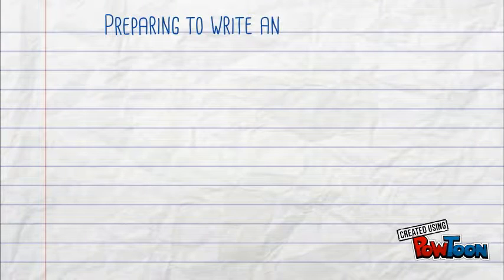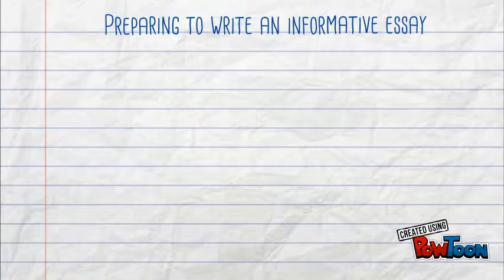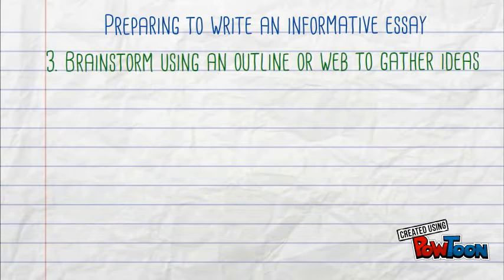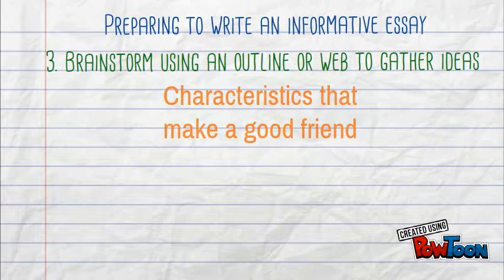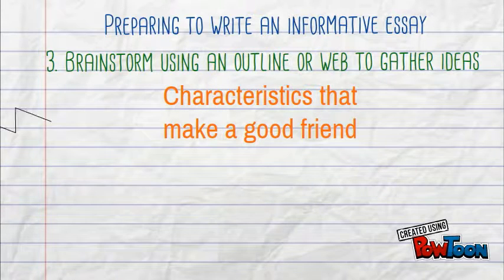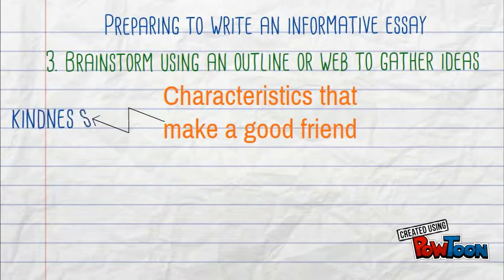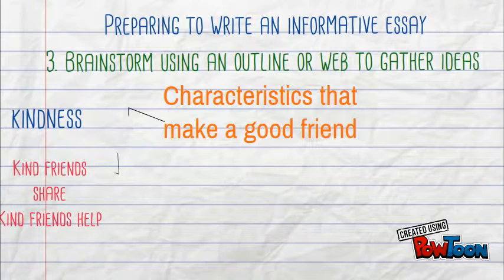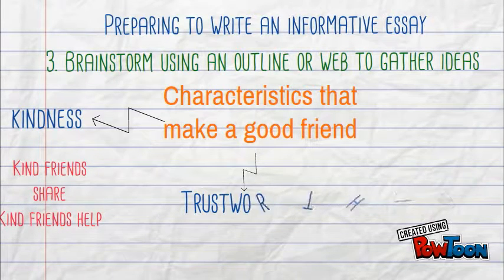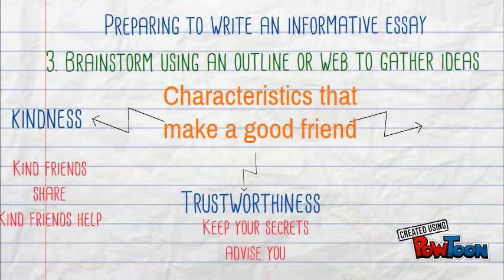The third step in writing an informative essay is to brainstorm using an outline or web to gather ideas. View the brainstorm below and notice how it relates to our main topic, characteristics that make a good friend. We also provide supporting details to research.